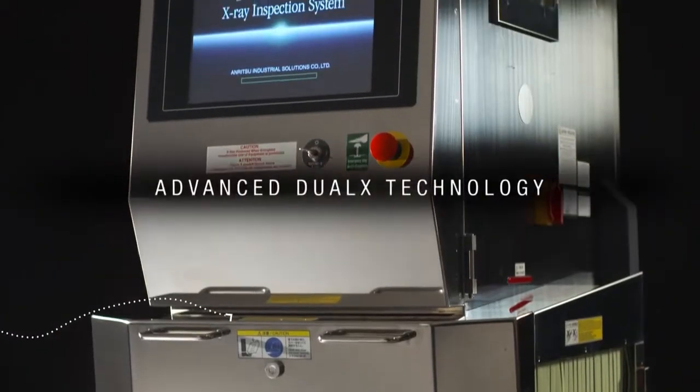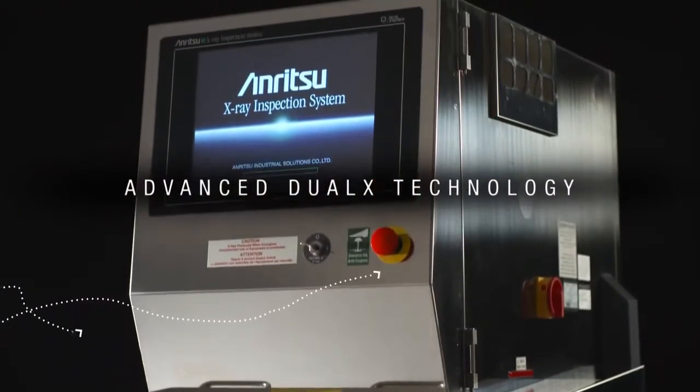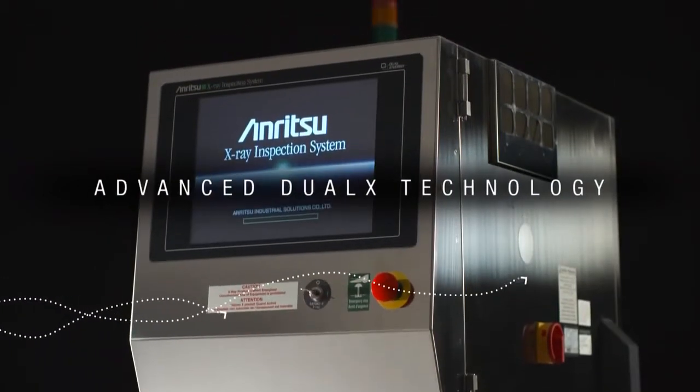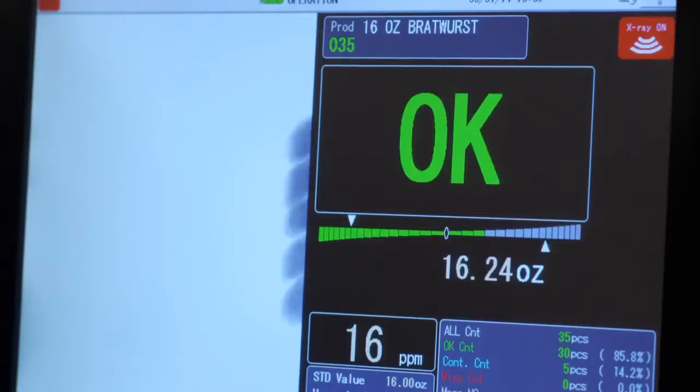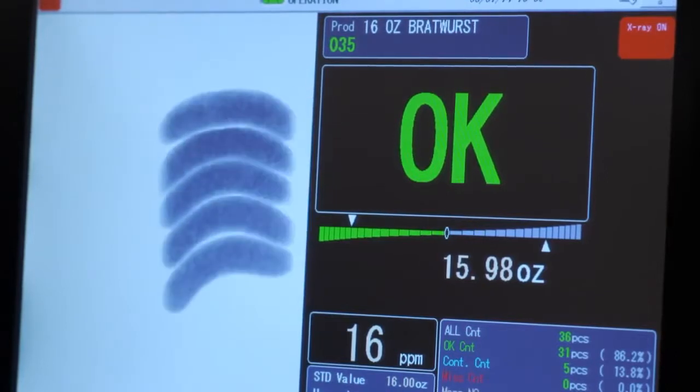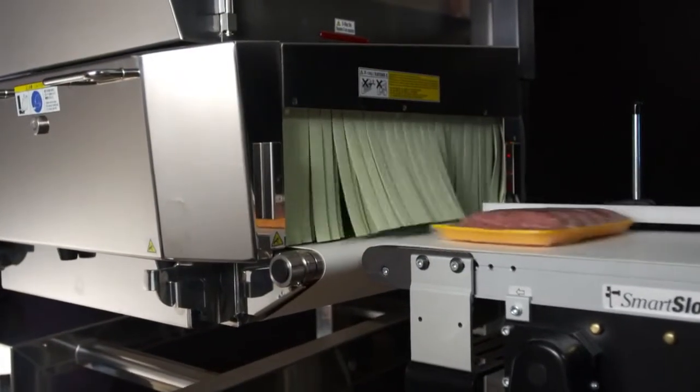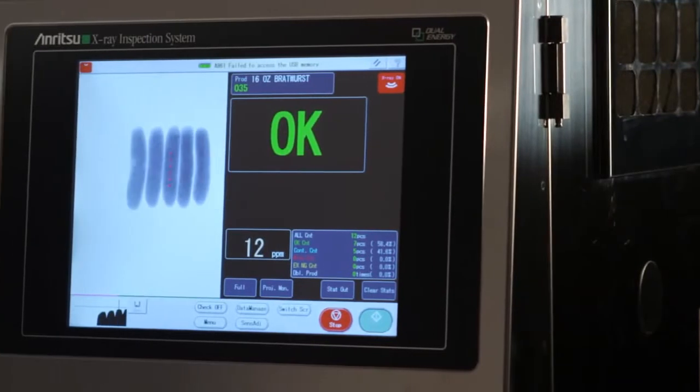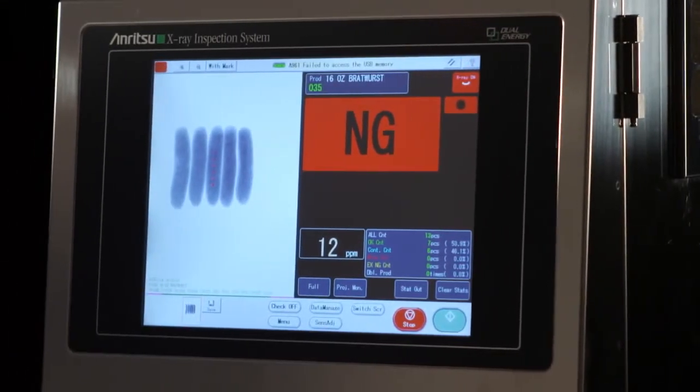The Anritsu HD, Ultra HD, and Dual X technology installed in our machines can detect even the most minute contaminants. The Anritsu HD system detects metal contaminants as small as 0.4 millimeter diameter, and stones, bones, and glass as small as 1 to 2 millimeters.